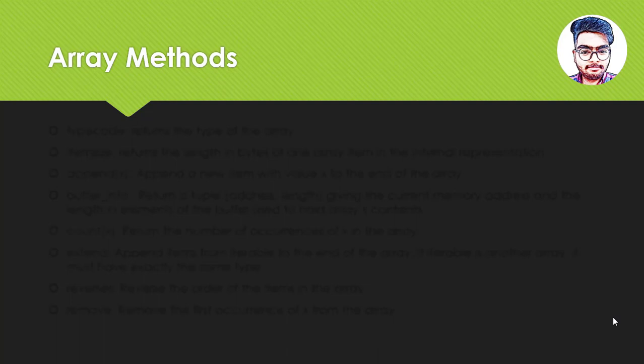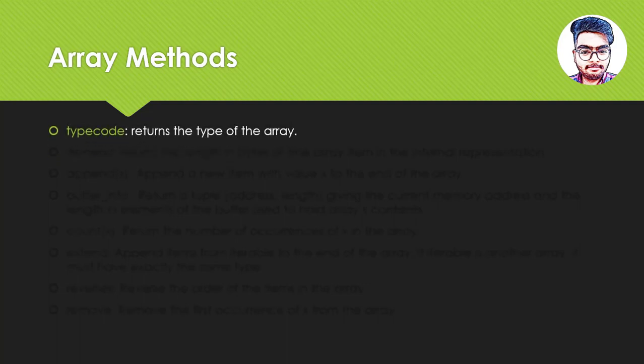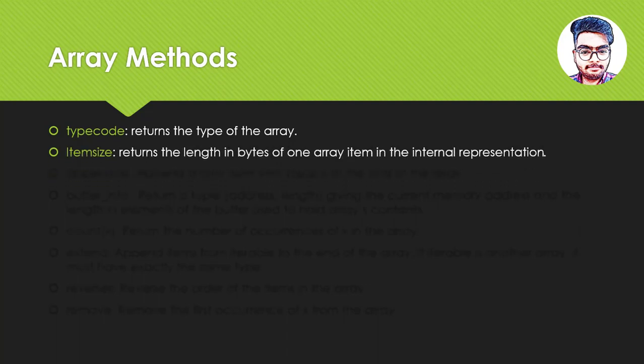So the next topic we are going to discuss is the inbuilt array methods in Python. The first method is the type code method, which returns the type code of the array. For example, if we have created an integer type array then the type code method would return us i; if we have created a float type array then it would return us f. The next method is the item size method, which returns the length in bytes of one array item in the internal representation.